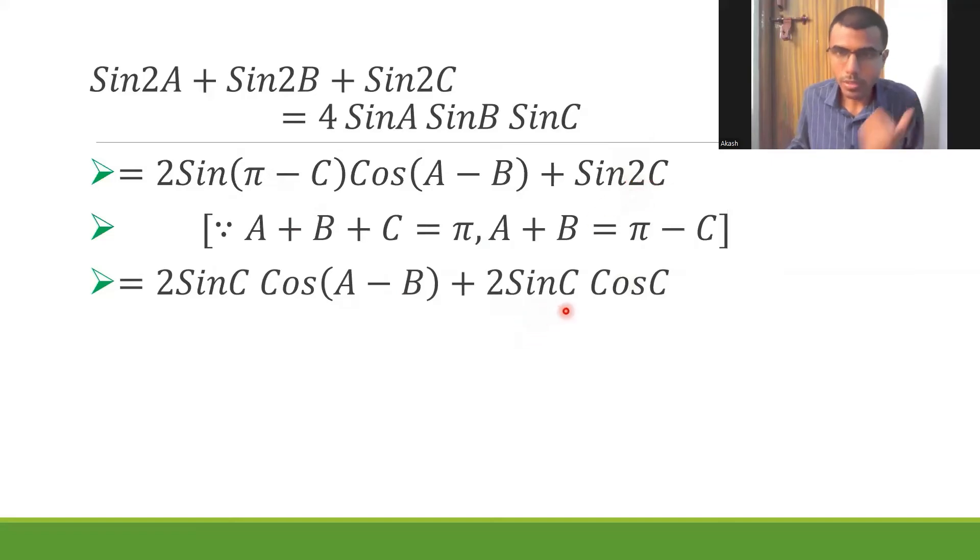Now sin2C is nothing but 2sinC cosC, because sin2A is 2sinA cosA, so sin2C would be 2sinC cosC. Now in these two terms I'm going to take 2sinC common. If I take that, I'm left with cos(A-B) + cosC.